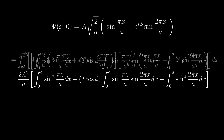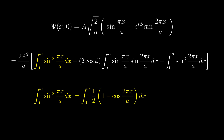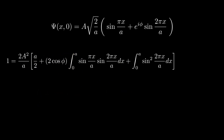Each term inside the brackets corresponds to a distinct integral we need to evaluate. Let's start with the first integral: the integral from 0 to a of sine squared of πx/a. Using the standard identity for sine squared, we rewrite it as one-half times (1 minus cosine of 2πx/a). Integrating term by term, the integral of 1 gives a, and the integral of cosine gives 0 over the limits, leaving us with a/2. Looking at the last integral, it follows the exact same steps, so we can immediately conclude its result is also a/2.